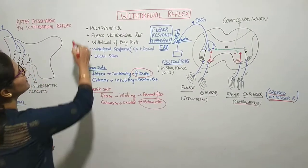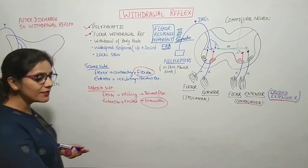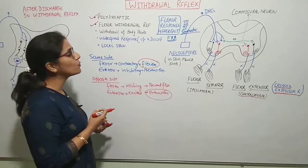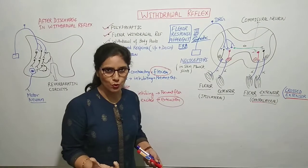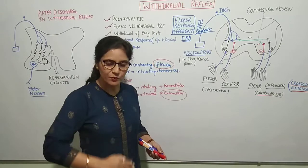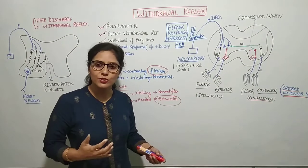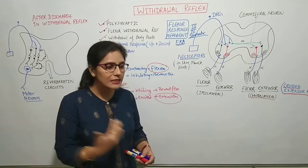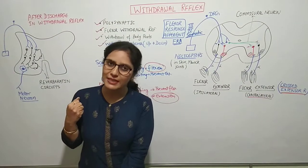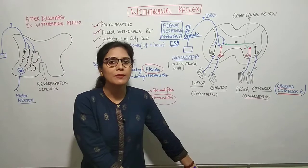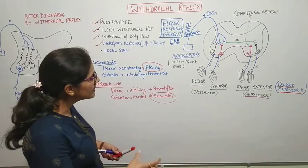Withdrawal reflex is a polysynaptic reflex and also a protective reflex, because it withdraws the body from a painful stimulus. We call it the flexor withdrawal reflex because it involves flexion to withdraw from pain. It is also a widespread response — with a stronger stimulus, the reflex spreads up and down the spinal cord on both sides, involving additional limbs.